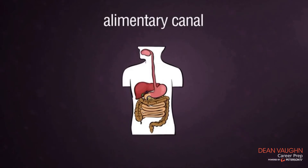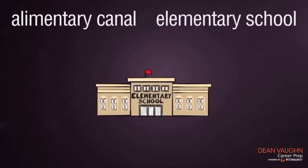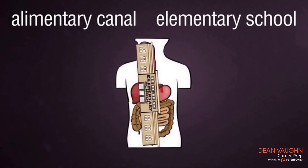Now, let's create an audionym for alimentary canal. How about elementary school? Elementary canal could remind you of elementary school. To remember where the alimentary canal is located, see the elementary school in place here from the mouth to the anus — a continuous hollow twisted tube extending from the mouth to the anus.